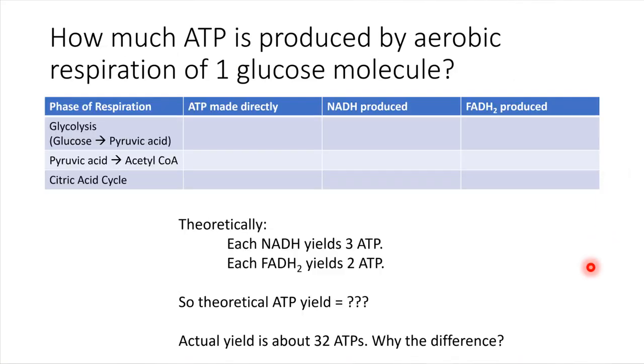So, what you should do at this point is pause the video and just take a minute, a few minutes, and fill out this table. This will be really good practice for just really thinking about each of these different stages of the breakdown of a glucose molecule. So during glycolysis, how many ATPs were made? How many NADHs were produced? How many FADH2s were produced? So go ahead and just fill out this whole table.